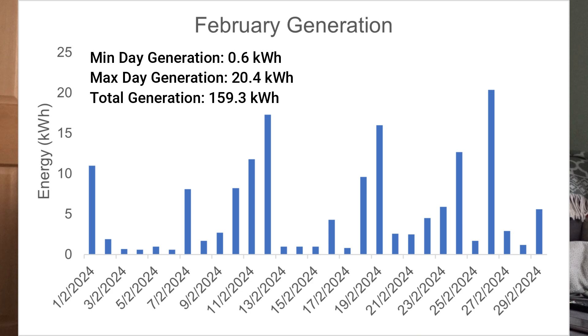It's been very cloudy here. I was told by someone I tutor that there were only three days in February where it didn't rain in Swansea. The best day for generation was around the 26th where we generated 20 kilowatt hours, but on other days we were generating about one kilowatt hour. In total, in February we only generated 159.3 kilowatt hours — that's 110 kilowatt hours less than last year.